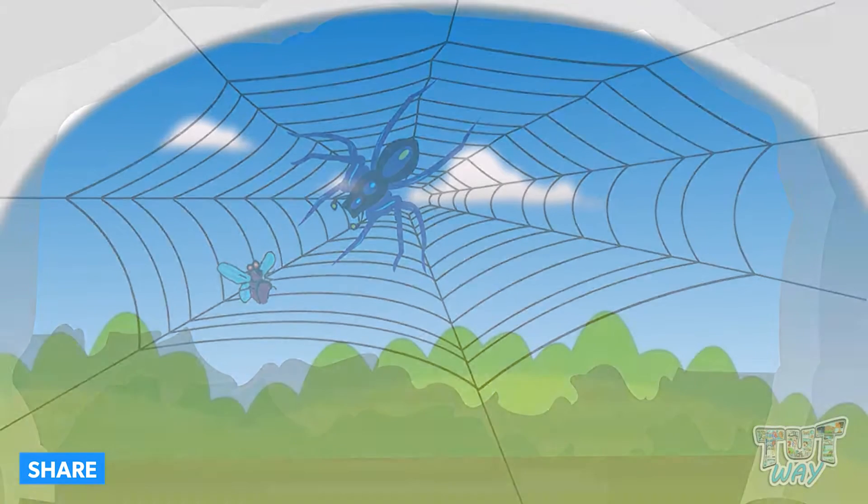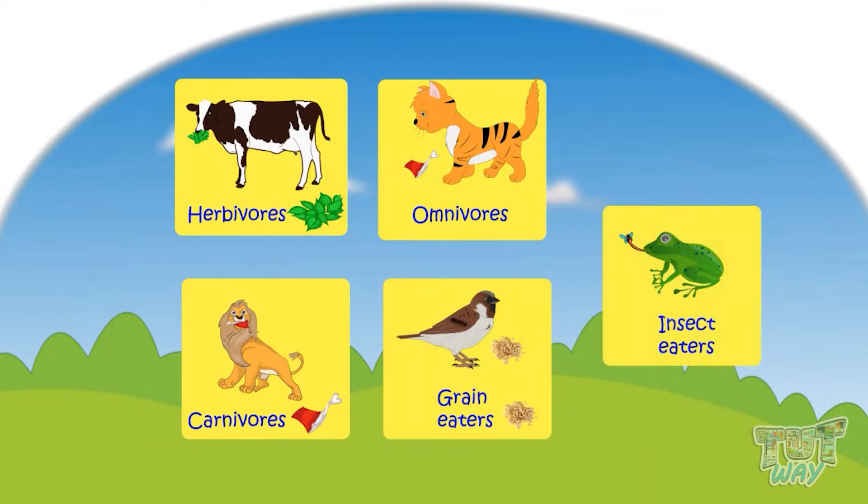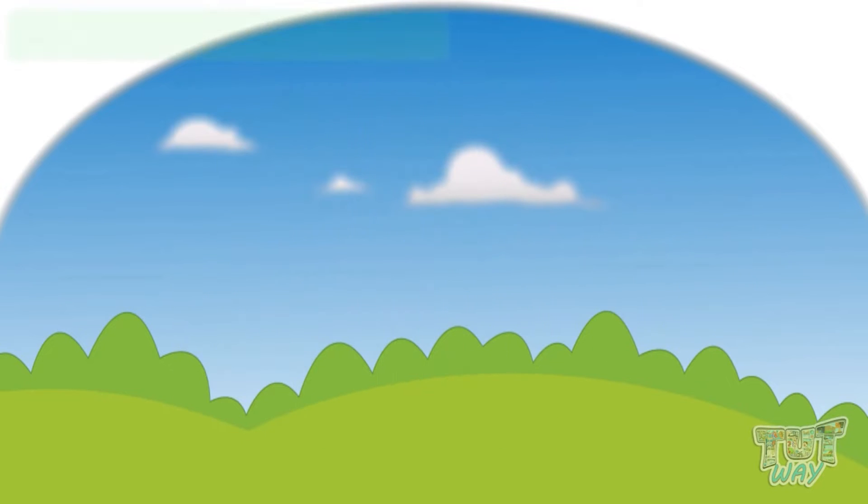So kids, we learned about what do different animals eat. Now, let's learn where do different animals live.